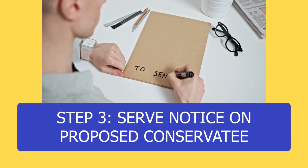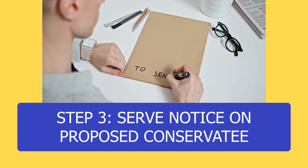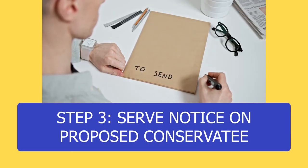Step 3: Serve notice on the proposed conservatee. The petitioner must have a disinterested party personally deliver a citation and a copy of the petition to the proposed conservatee.